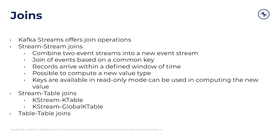The second type of join that Kafka Streams offers is the stream-table join. The stream-table join is not windowed like the stream-stream join was, which means that any time you get an event from the stream side, it's going to be joined with whatever the latest value for the table is, and that will produce the output record. This makes sense because the table is only representing the latest value for the record, whereas the stream is an actual individual event.